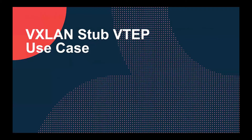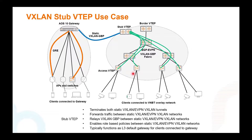The Stub VTAP will terminate both static and eVPN tunnels — the blue and the green. It will forward traffic between both networks and can relay VXLAN GBP between both networks, enabling role-based policies between both static and eVPN networks.